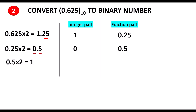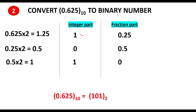Again we multiply 0.5 by 2 and we get 1. Here 1 is the integer part and the fraction part is 0. You repeat this process till the fraction part is 0. The answer will be 1 0 1, where this is the MSB bit.